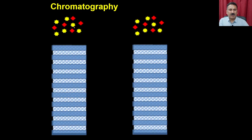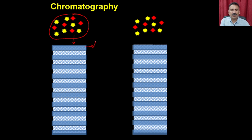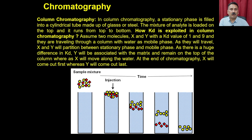When you load a mixture of proteins, they interact with different layers and distribute between the stationary and mobile phases. As molecules enter each phase, they partition between the two phases repeatedly, and that is how the molecules are ultimately separated. This is the fundamental mechanism by which chromatography separates molecules.